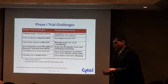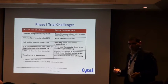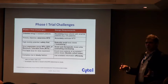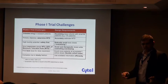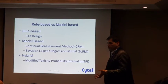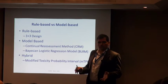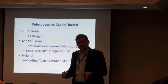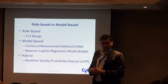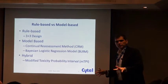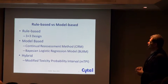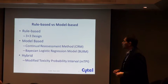I say 'all information' because the method currently used most — the 3+3 method — will only use information from the last two cohorts of subjects, ignoring what has happened up to that point in the trial.